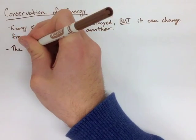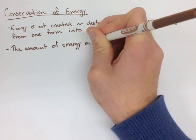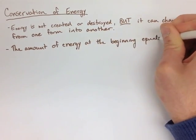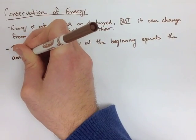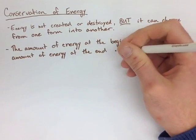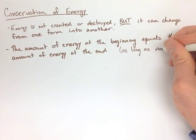What this means is the amount of energy that we have at the beginning has to be equal to the amount of energy that we have at the end, as long as none of it's lost to the environment. Energy in has to equal energy out. It's the law of conservation of energy.